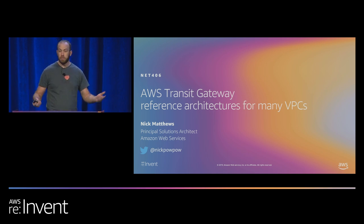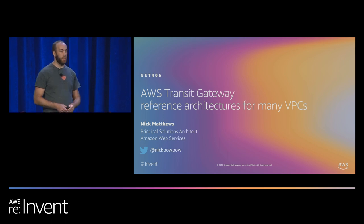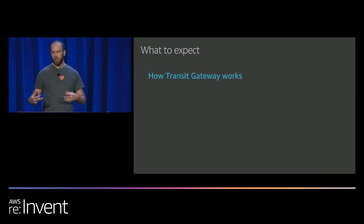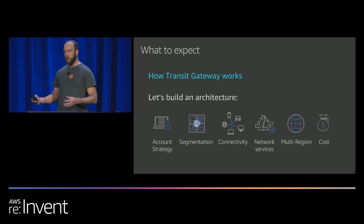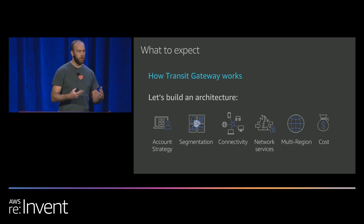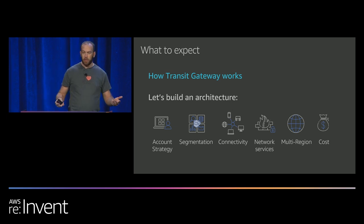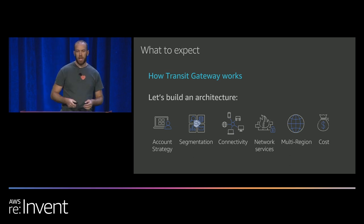I'm Nick. I do network stuff for the most part. Today we're going to be focusing on Transit Gateway — a little bit about how it works, and then digging into the reference architecture: costs, architecture, scalability, and really walking through how I have conversations with customers trying to build out their enterprise network, security, and segmentation, and how to think about all the different options AWS provides.